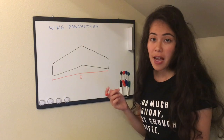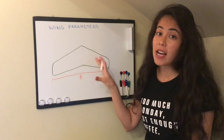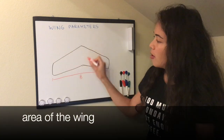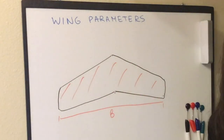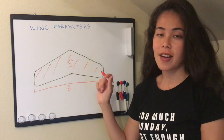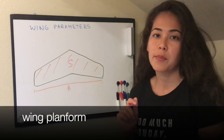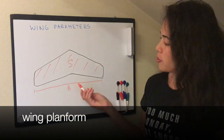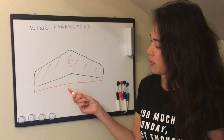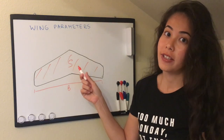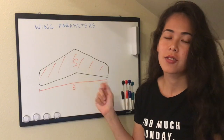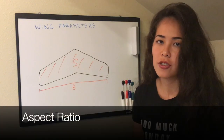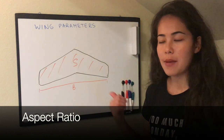The second parameter that we also see right away from the top view is the area of the wing. The area is denoted by capital letter S. The wing area is also sometimes called the wing planform. And do you think that the wingspan and the wing area are related? Yes, they are. And the relation is described through a term called aspect ratio, which is also a parameter of the wing.